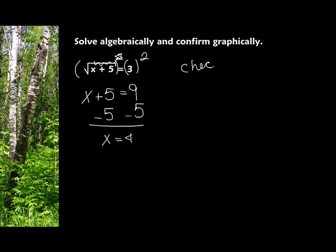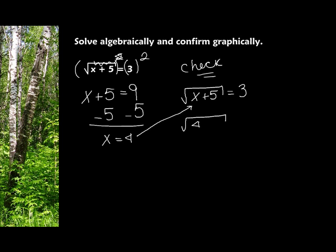But now I always have to check my answer, because this might not truly be a solution to this equation. So let's check it. I'm going to write the original equation: the square root of x plus 5 equals 3. I'm going to put 4 in for x. So I'm going to have the square root of 4 plus 5, and we're hoping it equals 3. Well, 4 plus 5 is 9, and the square root of 9 indeed gives me 3.